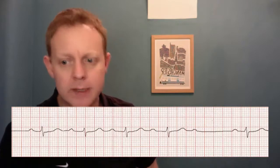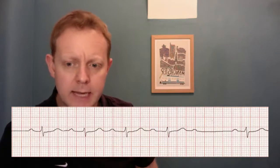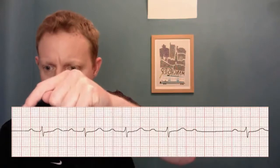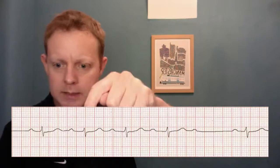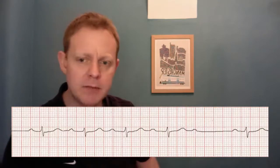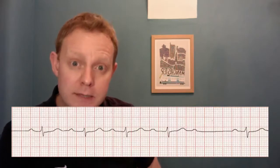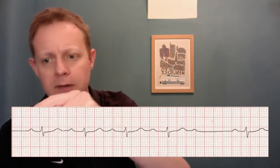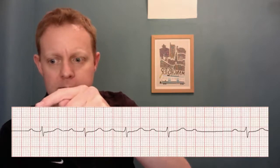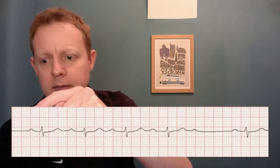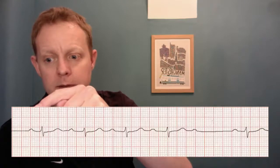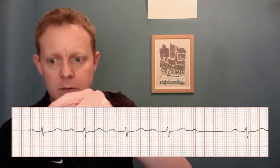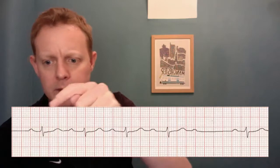Is the QRS complex narrow or broad? Well, it's narrow. Is there any atrial activity? Yes, we can see some P waves here. How is atrial activity related to ventricular activity? We've got a P wave and then a QRS complex. The PR interval here is quite long, really — about the upper limit of normal, about 200 milliseconds. So close to first degree heart block on that one.